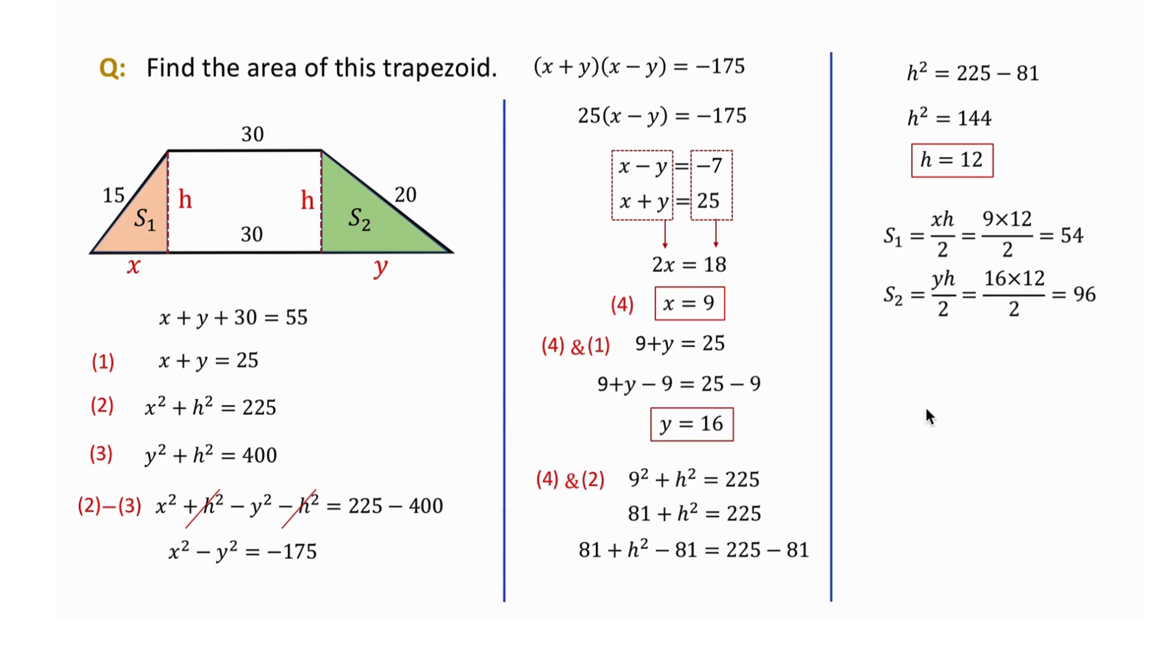The central area, which is a rectangle, is 30 times h, so S3 equals 360. The trapezoid area is the sum of S1, S2, and S3. Adding them together, we get the total area of the trapezoid as 510 square units.